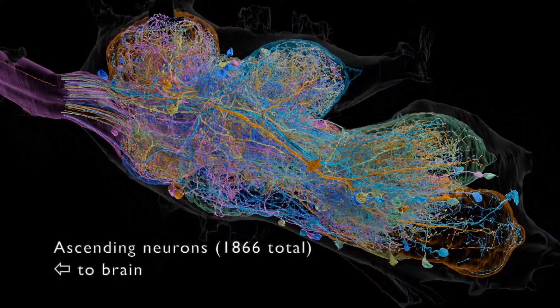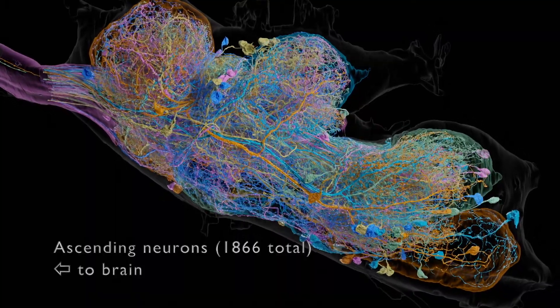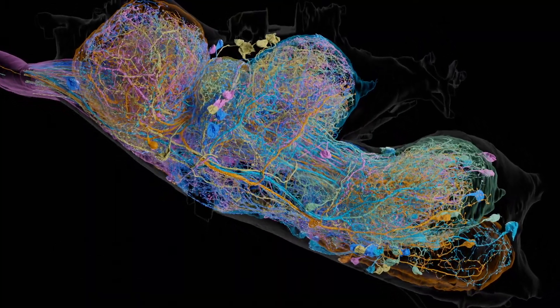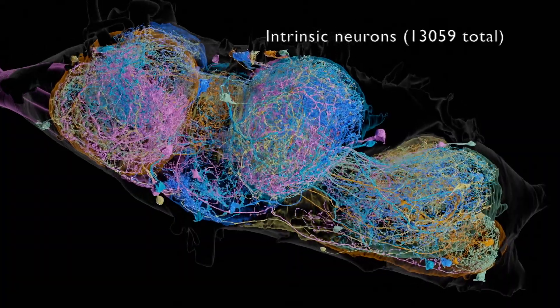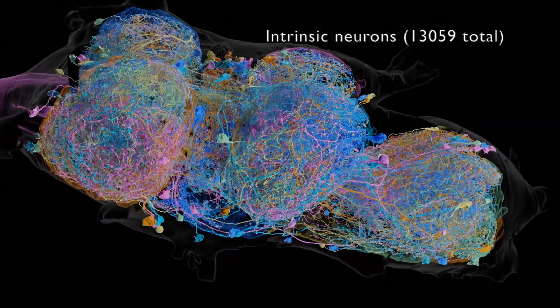Ascending neurons relay information from the nerve cord to the brain, while intrinsic neurons are restricted to the nerve cord and form its largest population.